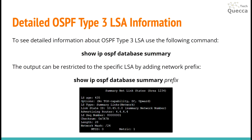If you want to check more detailed information about OSPF Type 3 LSAs, you can use the following command: show ip ospf database summary. If you want to restrict the output of this command, you can add a prefix at the end of the command. In the example output, we can see the summary link states for area 1234, the prefix advertised as 10.45.0.x, the advertising router R4 with router ID 4.4.4.4, the network mask, and the metric.